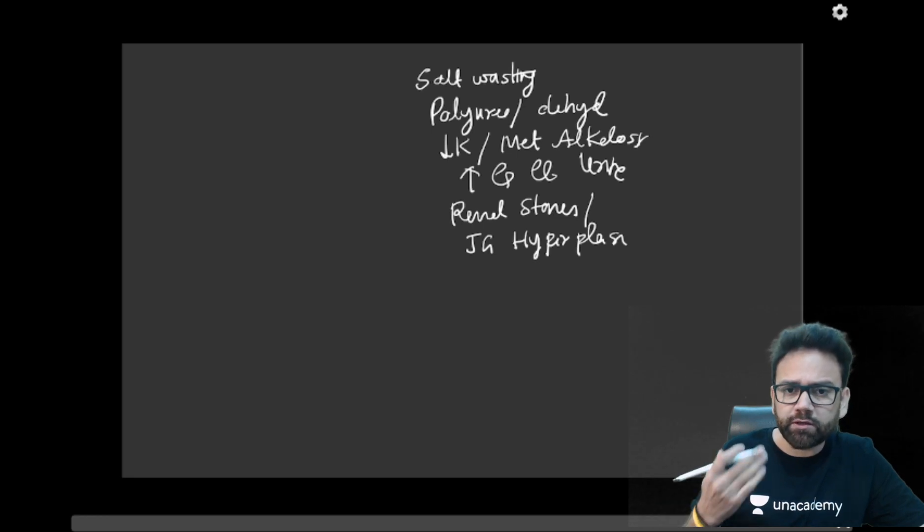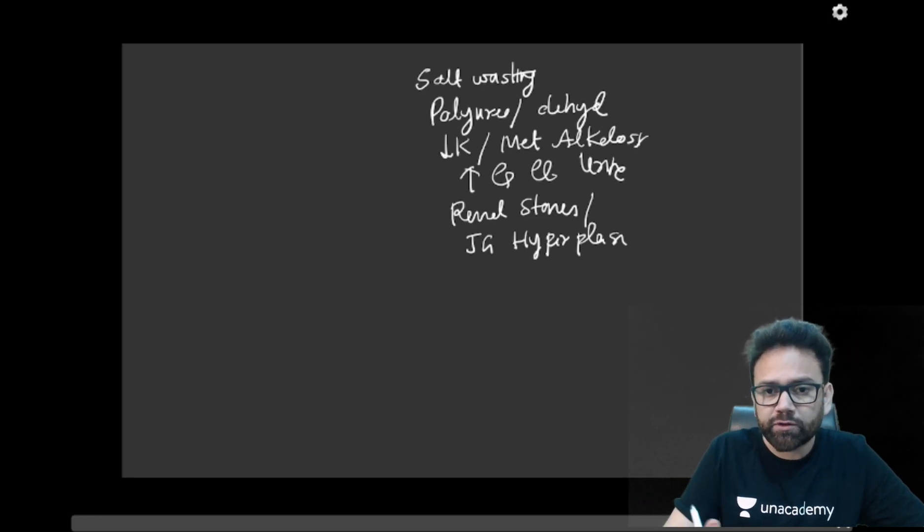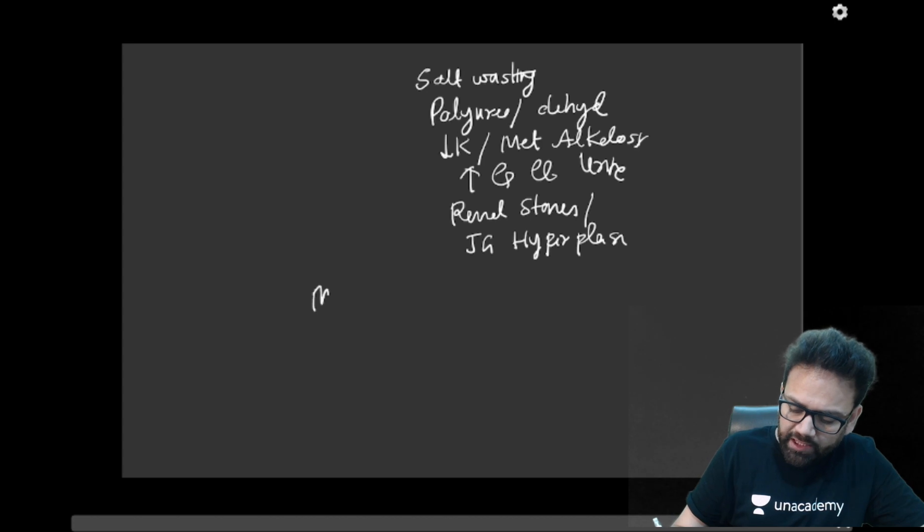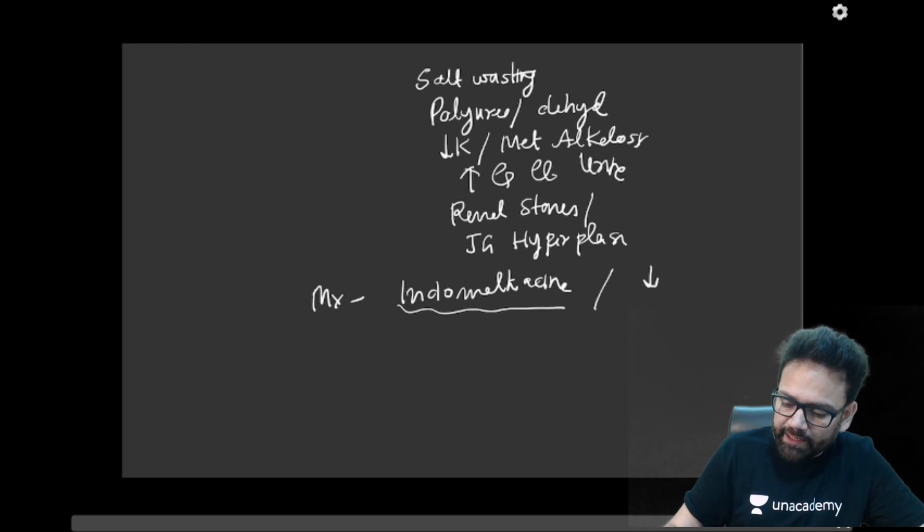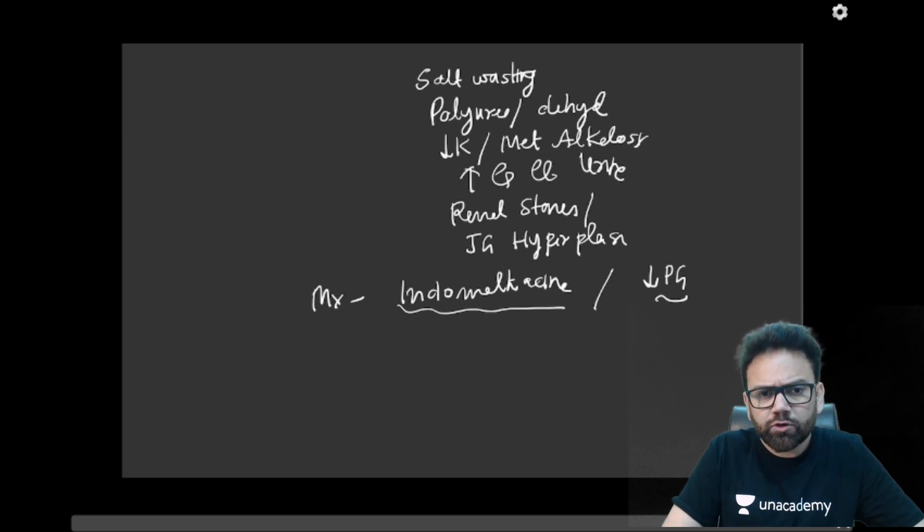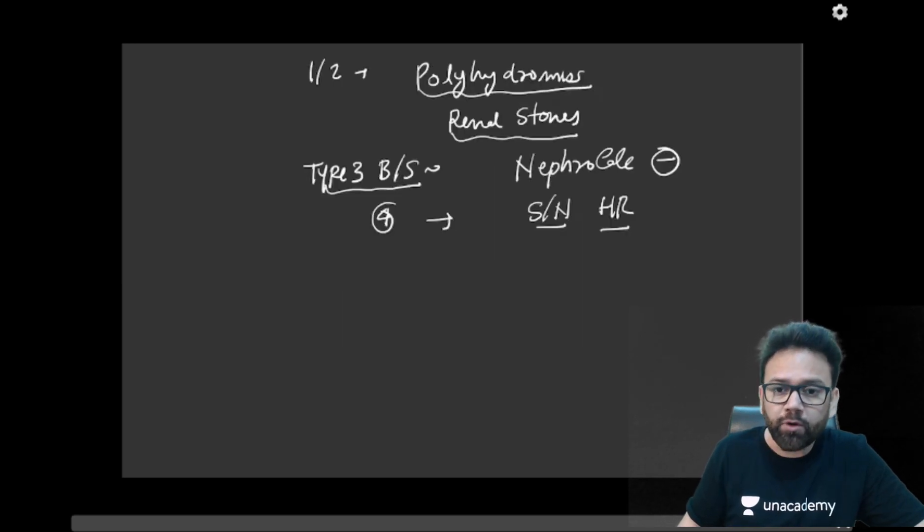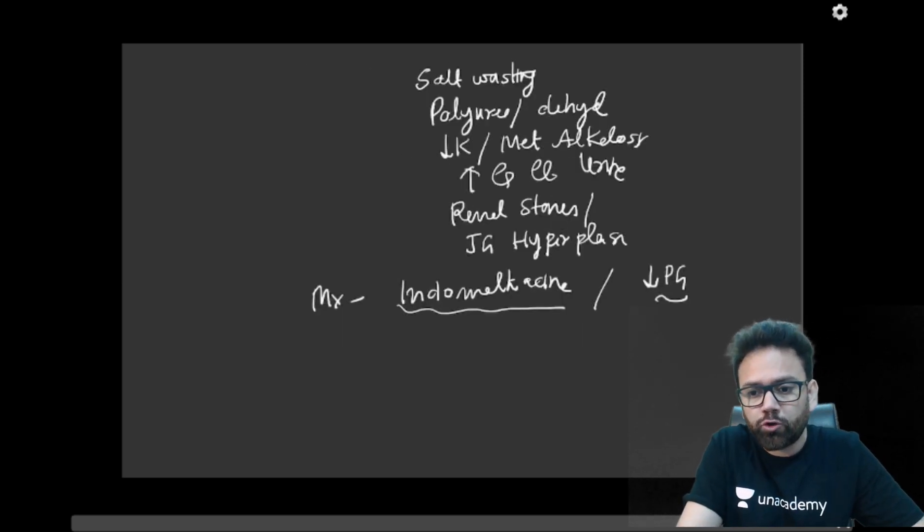Regarding management, we know that salt and these are all wasted. So we can give supplement also. But the management is Indomethacin or you can say NSAIDs. NSAIDs are given because it will inhibit prostaglandin because it is accompanied by juxtaglomerular hyperplasia. So these are the few features. Otherwise, there are also other types of, for example, sub-Bartter syndrome, mimic like Gitelman syndrome. That is different. But this is the summary of Bartter syndrome. What we should minimum know to solve your MCQ.